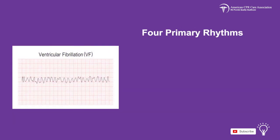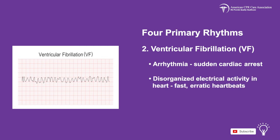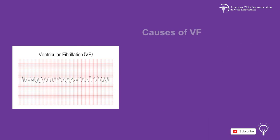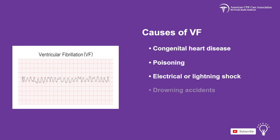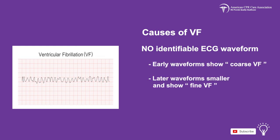The next cardiac arrest rhythm is ventricular fibrillation, known as VF, which is an arrhythmia that can cause sudden cardiac arrest. In VF, there is disorganized electrical activity in the heart and fast erratic heartbeats, causing the heart to stop pumping blood to the rest of the body. VF may have many causes including congenital heart disease, poisoning, electrical or lightning shock, drowning accidents, trauma, or drug toxicity. VF does not have an identifiable ECG waveform as the heartbeats are erratic. Early waveforms show a coarse VF, but after a few minutes the waveforms become much smaller and show a fine VF.